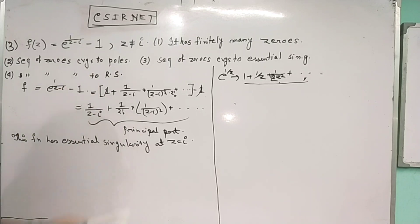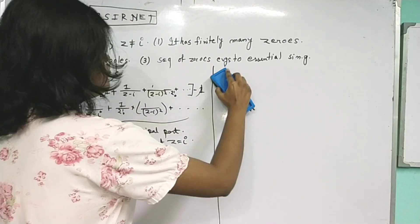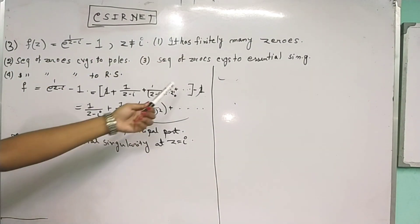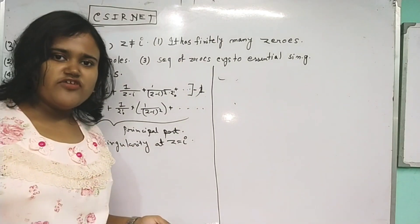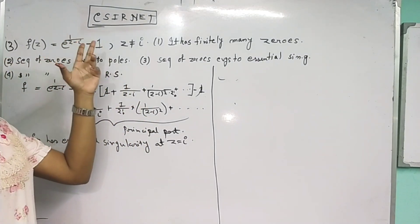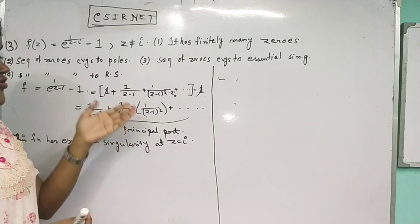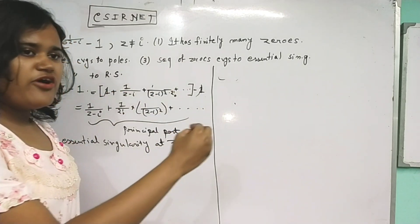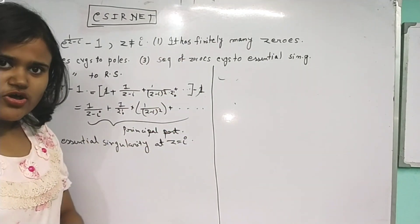They are asking: does this function have finitely many zeros? Secondly, does the sequence of zeros converge to a pole? Does the sequence of zeros converge to an essential singularity? And does the sequence of zeros converge to a removable singularity? So it's important to find where the sequence of zeros converges. A function has a zero at point z₀ in the complex numbers if f(z₀) = 0.